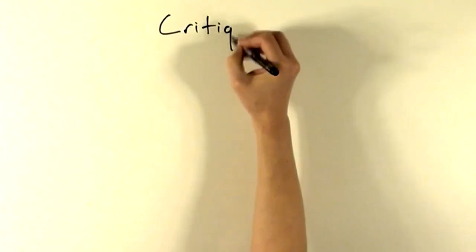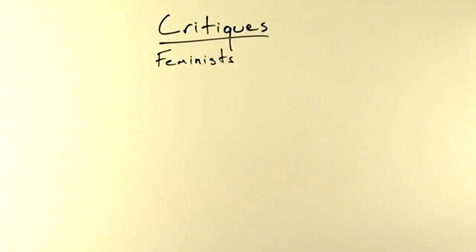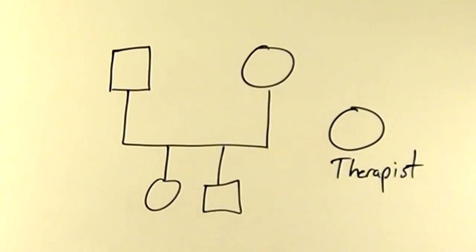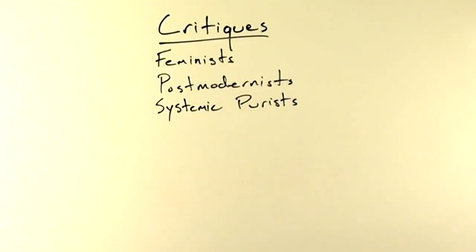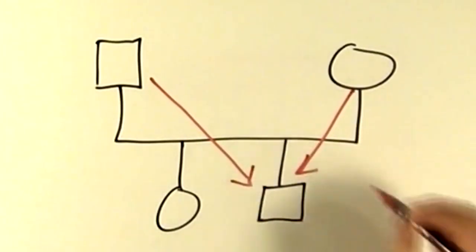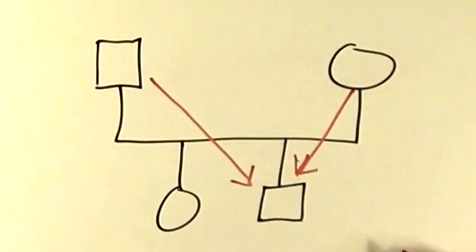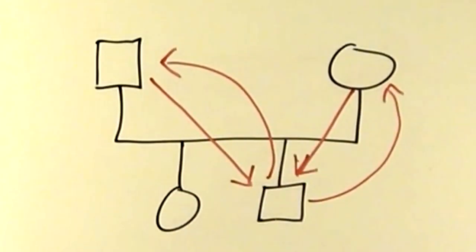So what are the critiques of Bowenian theory? Feminists criticize the way Bowenian theory privileges masculine, northern European culture by promoting independence and devaluing emotion. Postmodernists criticize Bowenian theory since the theory does not recognize the way the therapist is a part of the system. Systemic purists criticize Bowenian theory since it posits that dysfunction and fusion travels in one direction, from parents to children, rather than acknowledging that dysfunctions are often circular in nature, with children participating in the family dynamic.